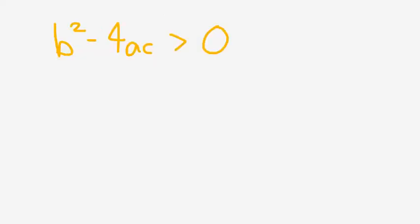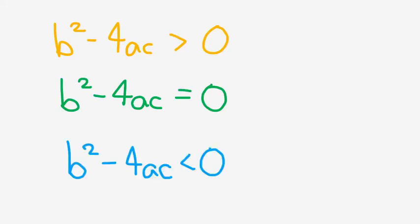If b squared minus 4ac is greater than zero, then there are two distinct real roots. If b squared minus 4ac equals zero, then there is one distinct real root. And if b squared minus 4ac is less than zero, then there are no real roots.